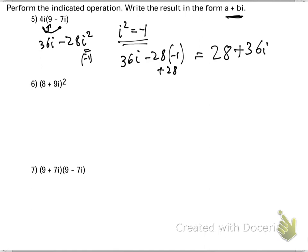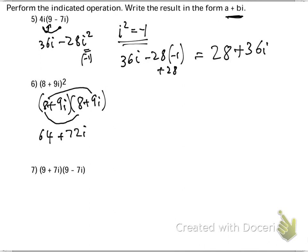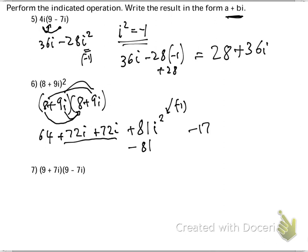8 plus 9i squared. Don't just square the 8 and square the 9i. Think of it as 8 plus 9i times 8 plus 9i. 8 times 8 is 64. 8 times 9i is 72i. 9i times 8 is also 72i. And finally, 9i times 9i is positive 81i squared. But remember, i squared is negative 1, so this will give me a negative 81 here. Let's put it all together: 64 take away 81 is negative 17. Combine like terms: 72i and 72i is 144i. And that is your answer.